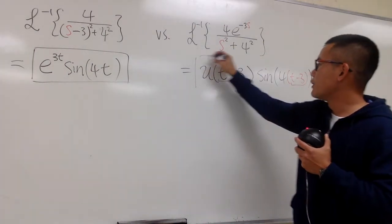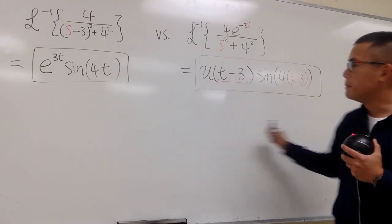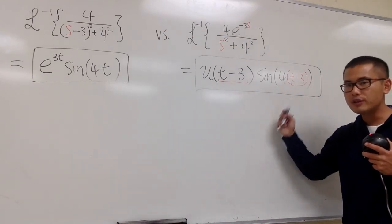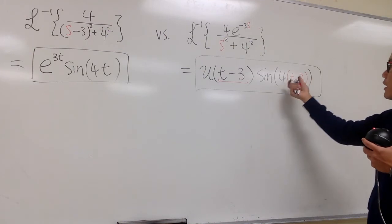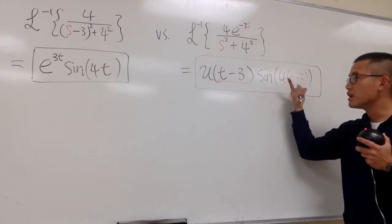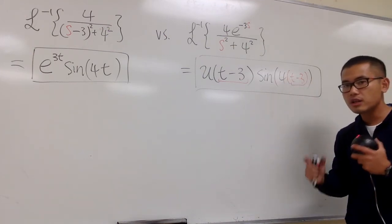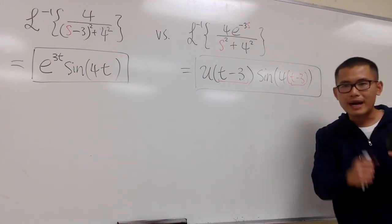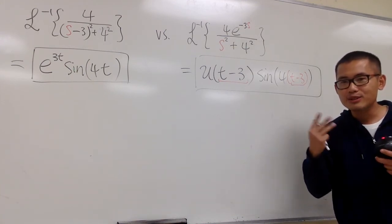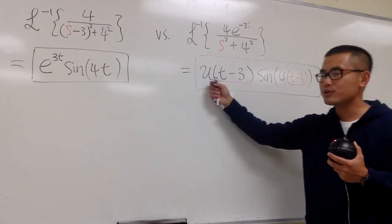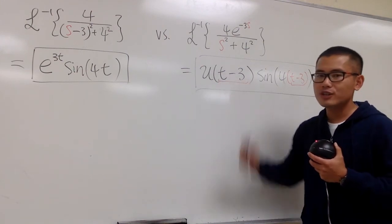And I will leave it as how it is. I'm not going to distribute it because this is actually preferred, so that you can see, this right here, we take the sine of 4t function, we take that to the right, we translate that to the right three units. And of course, you also multiply by the unit step function, all right?